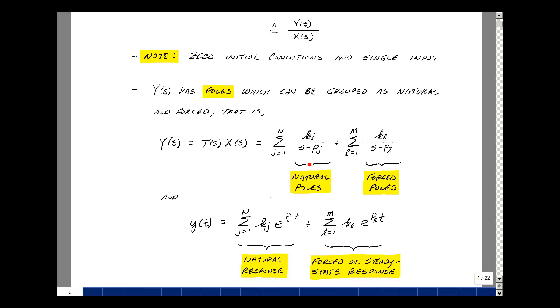Let's take the inverse Laplace transform. So the inverse Laplace transform of this would be e to the p sub j times t, times the residue, and then we'd have n of those. And then for the force poles, something very similar: e to the p sub l times t times the residue, and then we'd have m of those.